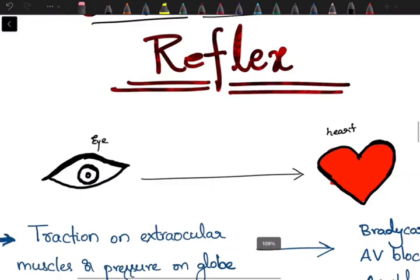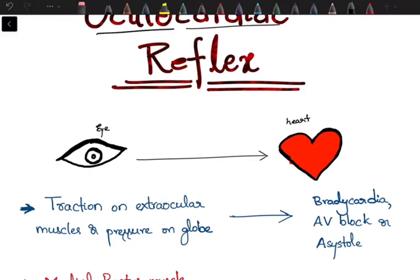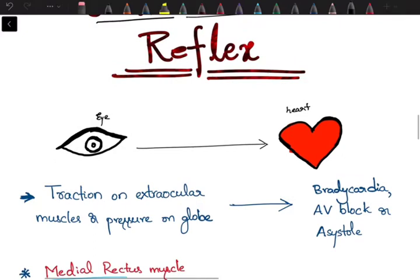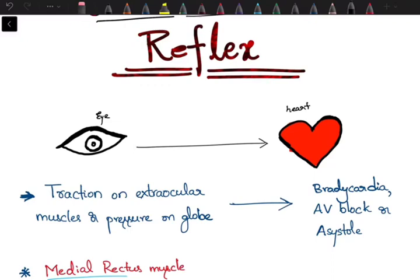This name is self-explanatory: oculocardiac means eye and heart. In this reflex, something happening at the eye leads to changes at the heart. Traction on extraocular muscles, usually the medial rectus muscle during surgical procedures like squint surgery, or pressure on the globe and its contents can cause this reflex.